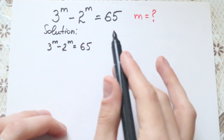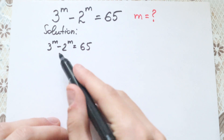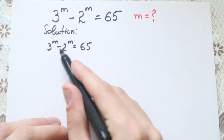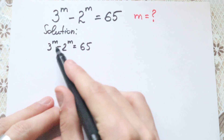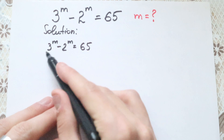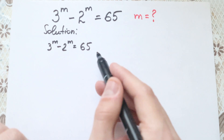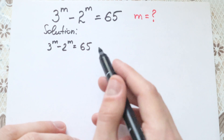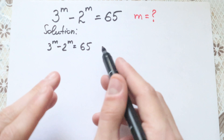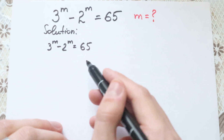What are we going to do? The first way is to use log, but right here we have 3 to the m, 2 to the m, and 65. We have a lot of parts with exponents, so it's not good to take log on both sides. So I suggest using a really interesting trick here.